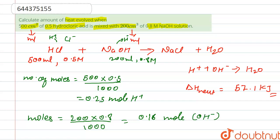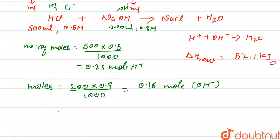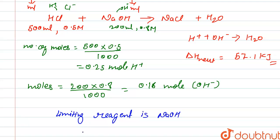Here we have 0.25 mol of H⁺ and 0.16 mol of OH⁻, so the limiting reagent is NaOH. We calculate the amount of heat released based on the moles of OH⁻ from NaOH.